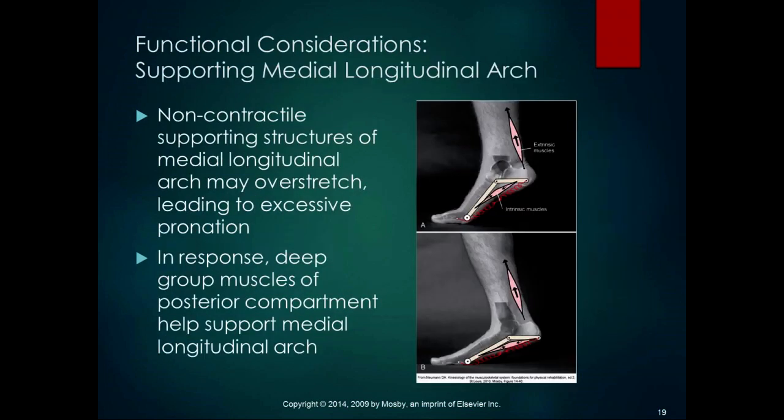For the medial longitudinal arch, non-contractile structures like the plantar fascia and bone structure provide support, but connective tissue over-stretching can lead to excessive pronation or pes planus — a dropped or flattened arch. The muscles of the deep posterior compartment can contract concentrically to help support the medial longitudinal arch, and also contract eccentrically to slow down pronation as you roll through the foot during gait — working both to statically support the arch and control the rate of pronation during weight acceptance.